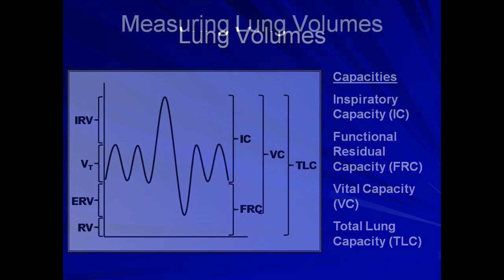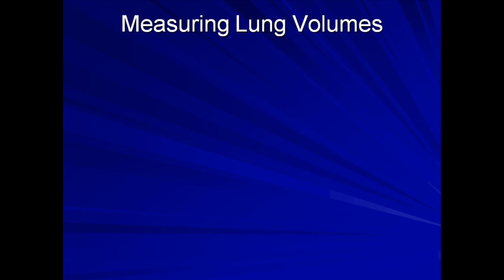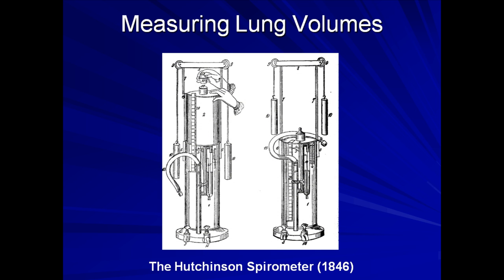Most lung volumes are surprisingly simple to measure. A device that does so is known as a spirometer. Here is the original diagram of the first true spirometer, invented by the British physician John Hutchinson in 1846. Not only did Hutchinson invent the device, but he also was the first to recognize the possible medical importance that these measurements might have, going as far as recommending to the insurance industry in London at the time that they use vital capacity in actuarial predictions for persons selling life insurance.